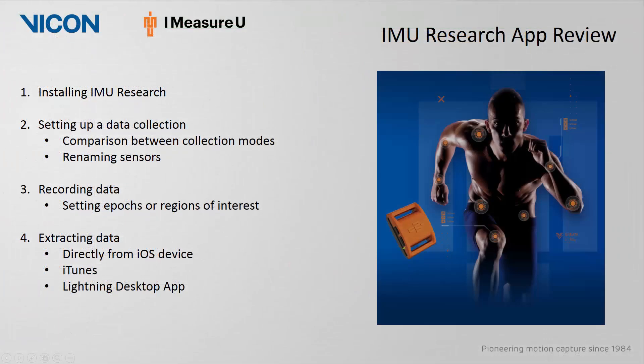To review, this video first examined how you can install the IMU Research app on your iOS device. It then presented how you can set up a data collection, including a detailed summary of the two collection modes — Stream and Onboard — and provided insight on how you might choose the correct mode based on your application. It also showed how you could access individual sensor information, including being able to rename each sensor. An example of streaming data to the iOS device and collecting data to the onboard sensor memory was then presented, including how to set up a region of interest within your trial. Finally, this video showed how you can extract the sensor data directly from the iOS device or iTunes for stream data, and how you can use the Lightning desktop app to download the onboard data.